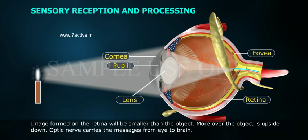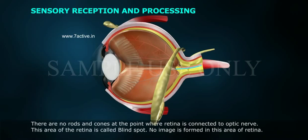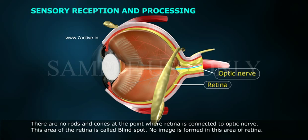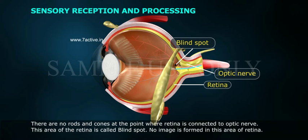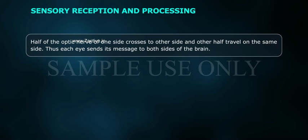The optic nerve carries messages from the eye to the brain. There are no rods and cones at the point where the retina is connected to the optic nerve. This area of the retina is called the blind spot, and no image is formed in this area. Half of the optic nerve fibers from one side cross to the other side.